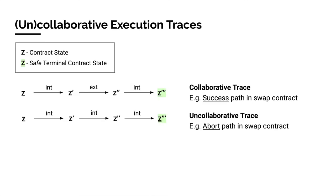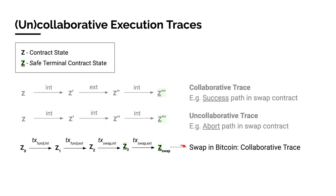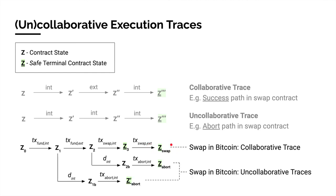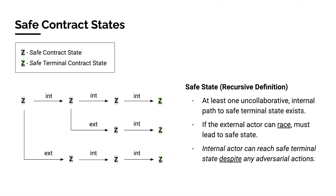In particular, we want to determine whether a safe execution of the contract can exist for the internal actor, despite any possible non-collaborative actions by the counterparty. A collaborative trace is one that is fireable by both the internal and external actor. An uncollaborative trace is fireable by a single actor only. For example, the swap path in our Bitcoin swap contract is a collaborative trace leading to a safe terminal state with swapped coins. Along this trace, there exist uncollaborative abort paths which allow termination if the collaborative path is not possible because the counterparty is not cooperative. A safe contract state guarantees that safe termination is possible — a state is safe if it features at least one uncollaborative trace leading to a safe terminal state. If along this trace the external actor can race with a transition, that transition must also lead to a safe state, guaranteeing that safe termination is always possible whether the counterparty is absent or adversarial.